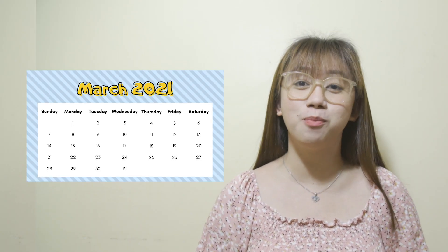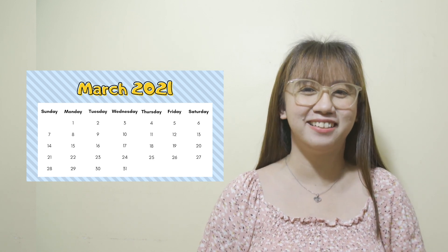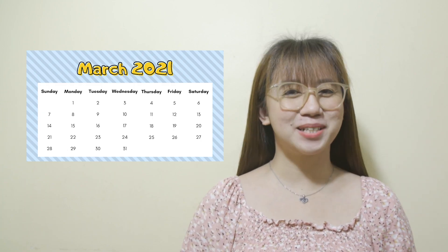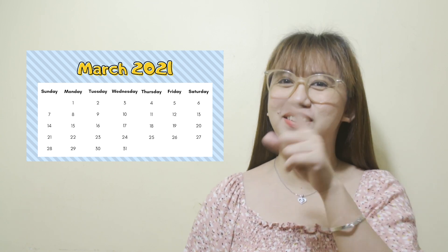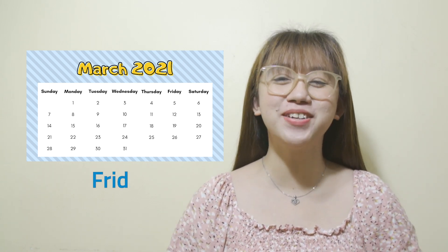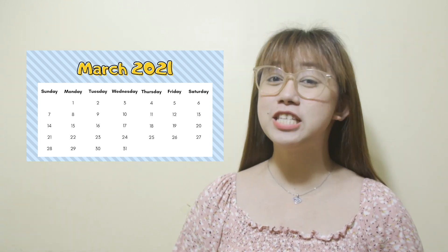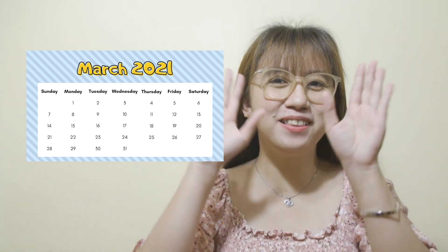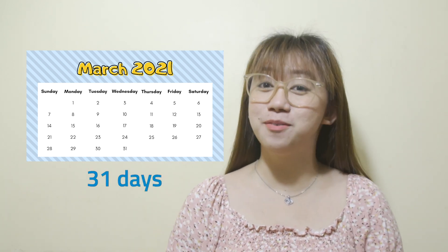Now, let's try to answer these questions using the calendar of March 2021. Game? Let's go! What is the month after March? Good job! The month after March is April. What day is March 26? Correct! March 26 falls on a Friday. How many days are there in March? Splendid! There are 31 days in March.